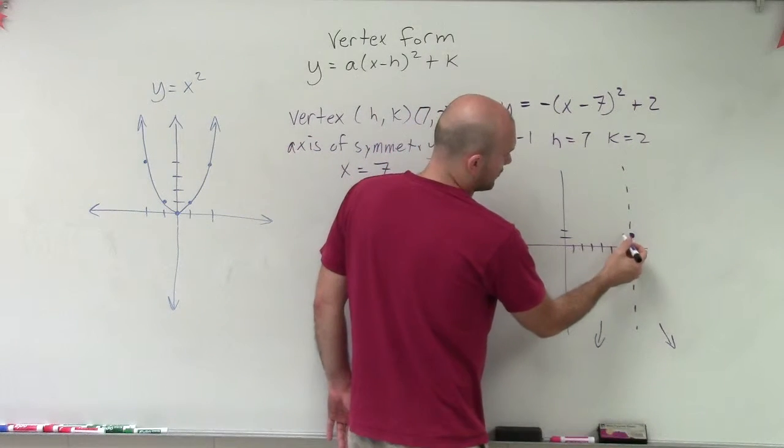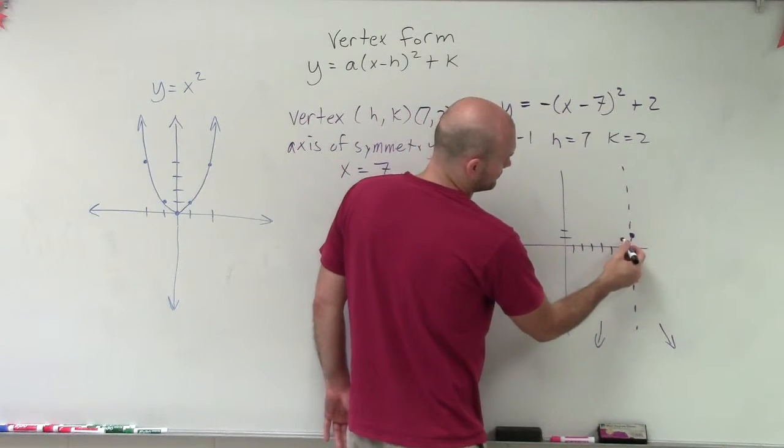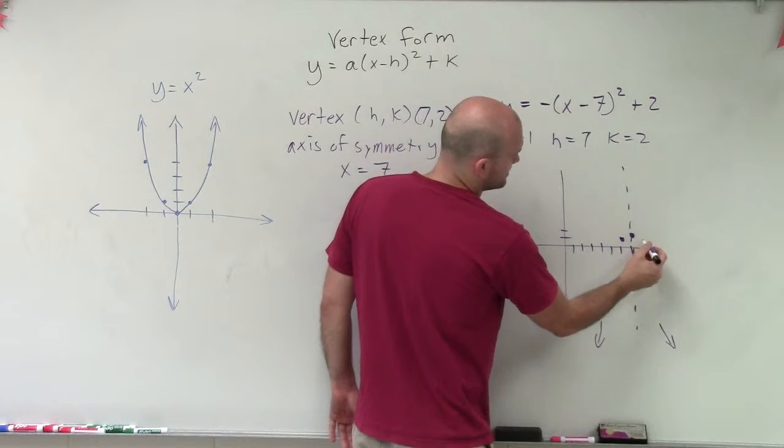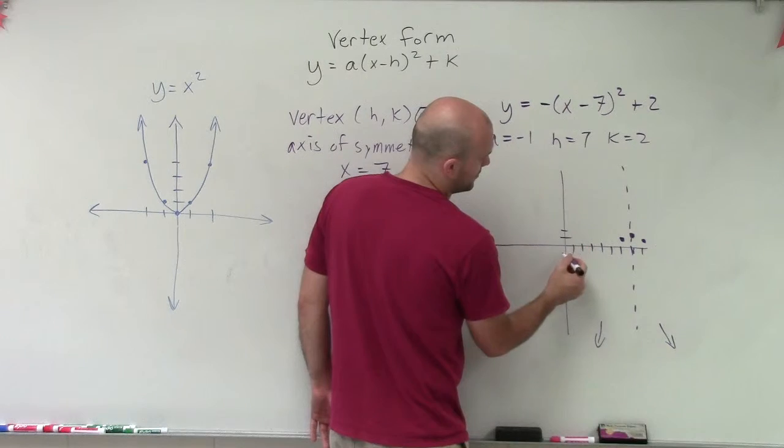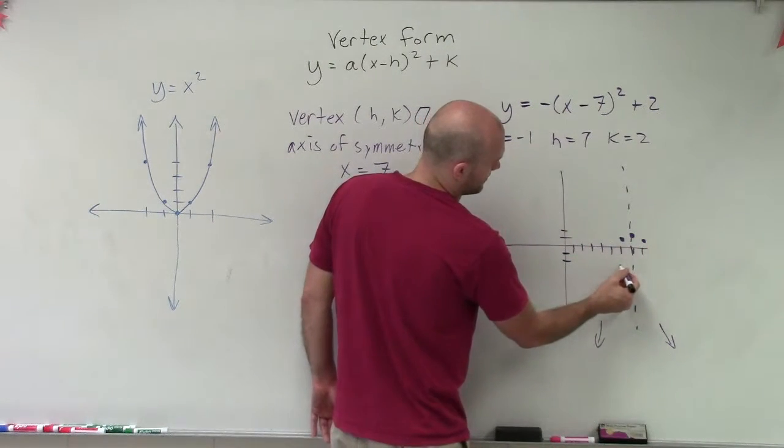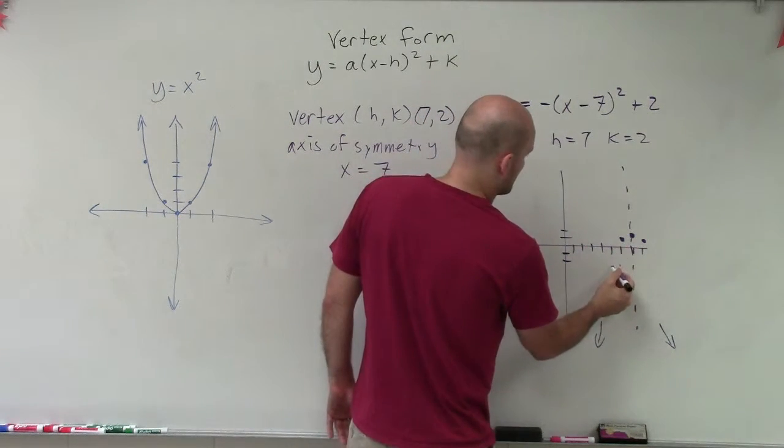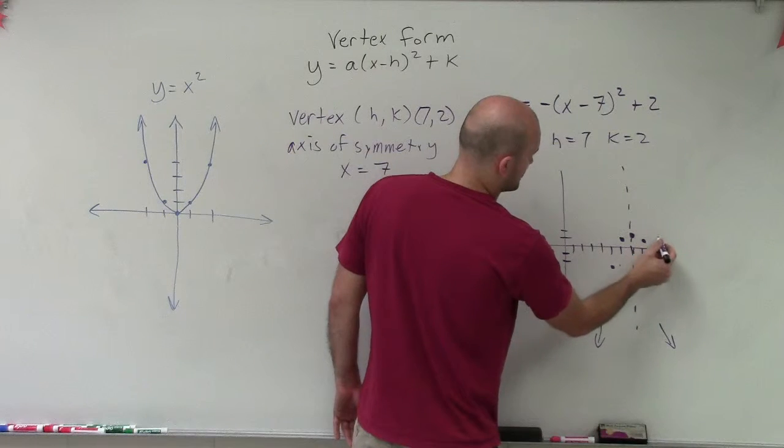So from my vertex, I'll go over 1, down 1. And then over 1, down 1. And then I'll go over 2, down 4. 1, 2, 3, 4. Over 2, down 4. Over 2, down 4. Over 2, down 4.